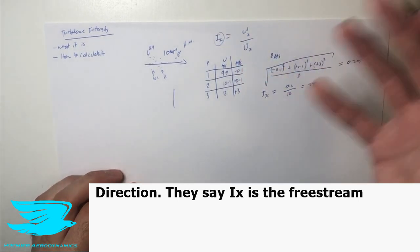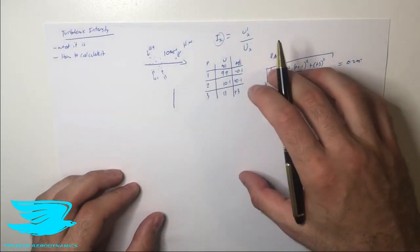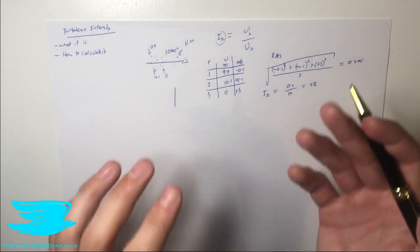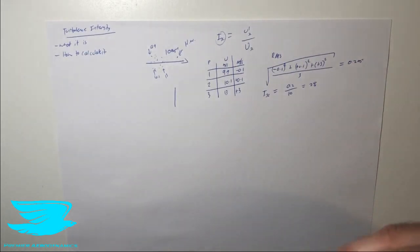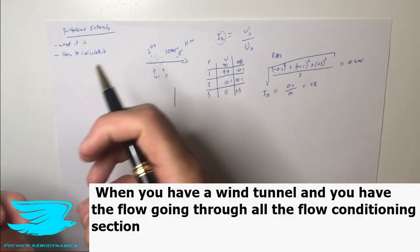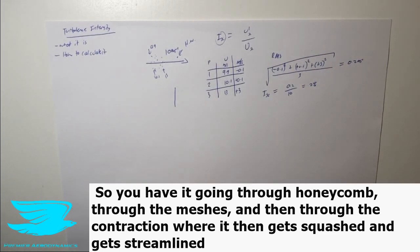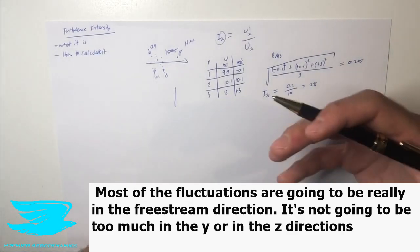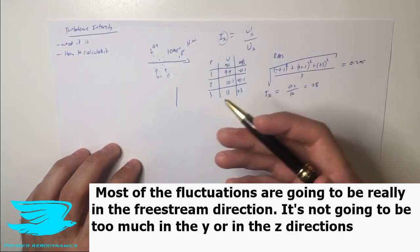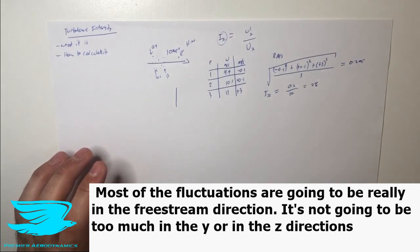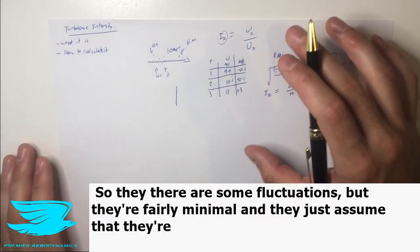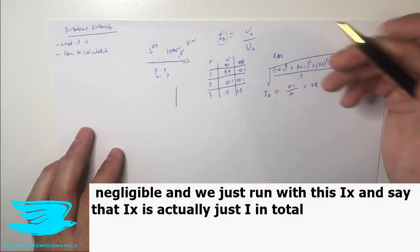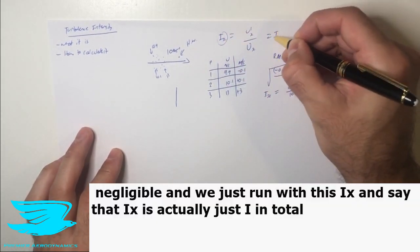The other reason why they assume that the fluctuations in the other two velocity components, so the Y and Z values, are negligible is because when you have a wind tunnel, and you have the flow going through all the flow conditioning sections, so going through the honeycomb and meshes, and then through the contraction where it gets squashed and gets streamlined, most of the fluctuations are going to be really in the freestream direction. It's not going to be too much in the Y or in the Z directions. So there are some fluctuations, but they're fairly minimal.